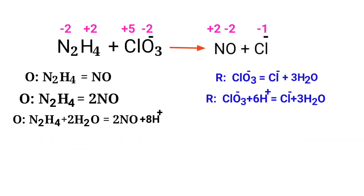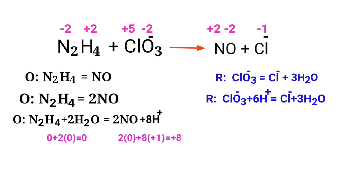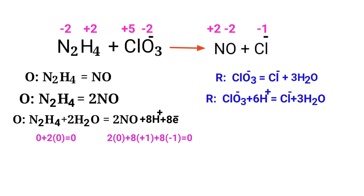For a redox reaction, the total charge must be equal on both sides. Checking the oxidation half reaction, both sides are not equal. To make them equal, add electrons — you cannot add protons. Adding 8 protons to the left side would be wrong. Instead, add 8 electrons to the right side to make both sides equal to 0. Now the charges are balanced in the oxidation half reaction.